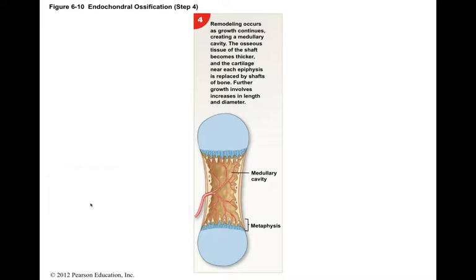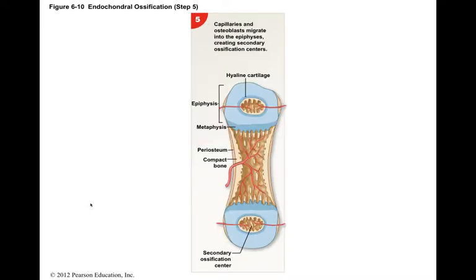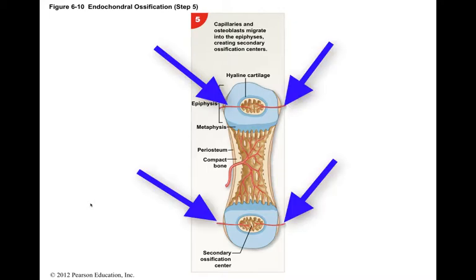Further growth involves two distinct processes, an increase in length of bone and an enlargement in the diameter of the bone. The enlargement in diameter we call appositional growth. In step five, the next major change occurs when the centers of the epiphyses begin to calcify. Capillaries and osteoblasts migrate into these areas, creating secondary ossification centers.